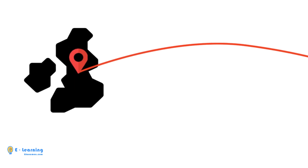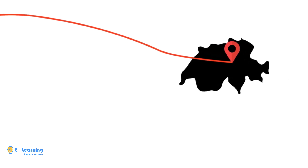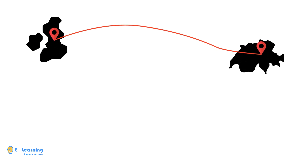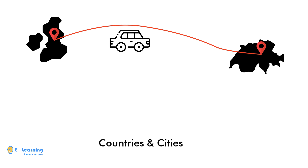Imagine you are in England and want to go to Switzerland to see a friend. First you need a plan for your trip. You are going by your own car, and the first factor of your plan is to see which countries and cities you want to pass through to reach Switzerland. The next factor is time — you need to calculate how much time you will spend in each country and city, and when you will arrive in Switzerland.